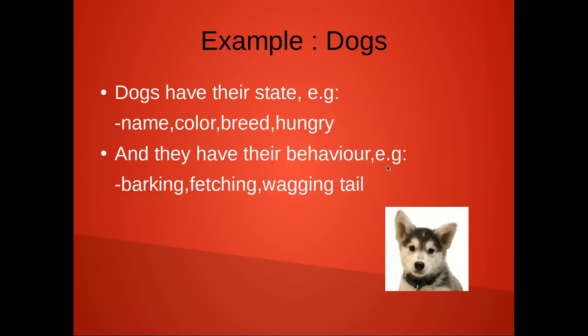For example, we have dogs. Dogs have their state — for example they have their name, color, breed, and hungry. And they also have their behavior — for example barking, fetching, and wagging tail.